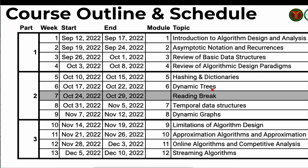Instead of storing items in a linear array where worst-case search is linear time, dynamic trees allow us to access data in O(log n) time. For dynamic trees, there are self-balancing trees. We will discuss self-rotating trees like AVL, red-black trees, and other self-balancing trees. We will also discuss suffix trees, which are meant to represent data in a way that speeds up searching, especially for pattern matching.